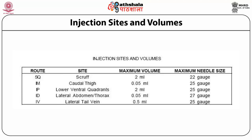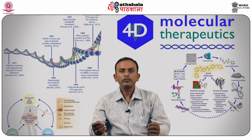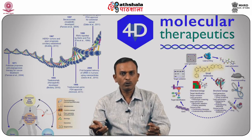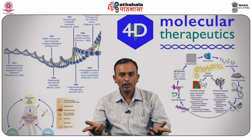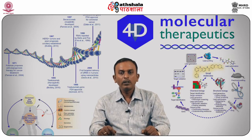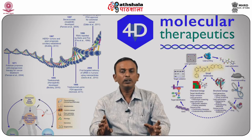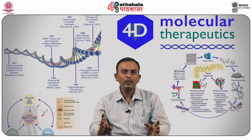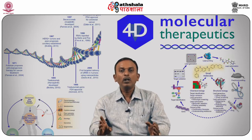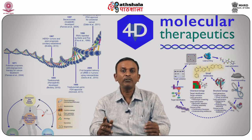These are the needle gauges used: 25 gauge for tail vein, 27 gauge for intradermal, and 25 to 22 gauge for other routes. Maximum volumes of aqueous antigen per route: subcutaneous 0.5 ml, intramuscular 0.05 ml, intraperitoneal 1 ml, intravenous 0.2 ml, intradermal 0.05 ml. These recommended volumes must be followed to avoid problems in research.